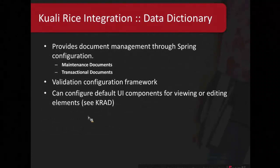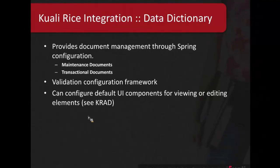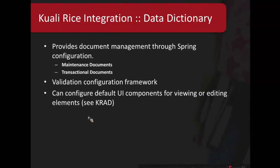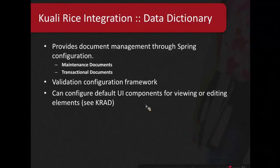The data dictionary also provides a validation configuration framework. We determine which fields are of which type and come up with validation criteria. The framework is very flexible — we can add additional types of criteria, it has the flexibility of using regex if needed, and you can also constrain your validation configuration in your dictionary. You can define new types of validation and apply those strongly-typed validations against your field data. You can also configure default UI components for viewing and editing, customizing every component along the way.